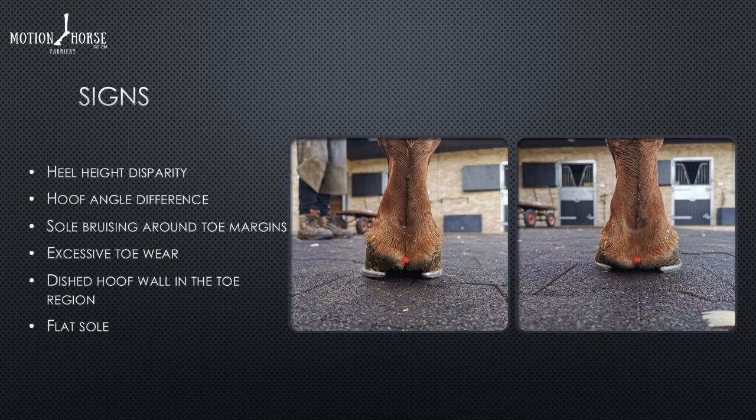Characteristic signs of hoof asymmetry include hoof height disparity — one hoof taller than the other. Hoof angle differences can range from very mild to very major and have links to flexural limb deformities, especially of the coffin joint, also known as club foot. You also see solar bruising, especially around the dorsal distal tip of P3, tending to occur in the higher, more upright foot.